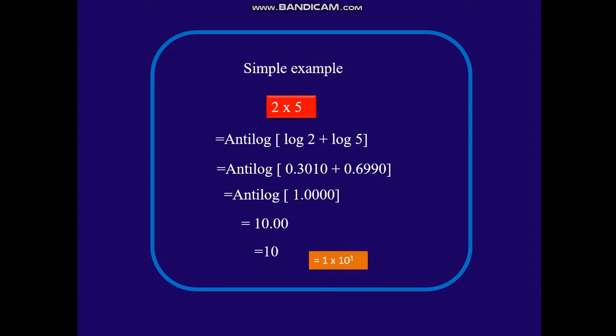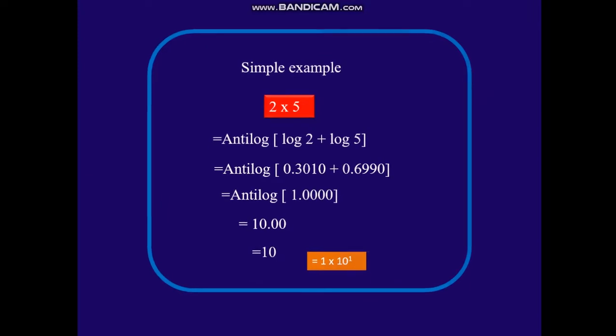The characteristic is 1, so you put the decimal after 2 digits, and that gives you the answer 10, which you already know. We can write it as 1 × 10 raised to 1. Look at the anti-log: 1.000 gives you 1 × 10 raised to 1. Now let us take some more examples like this.